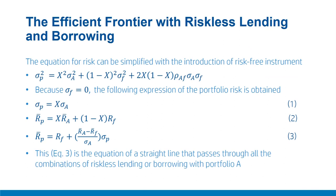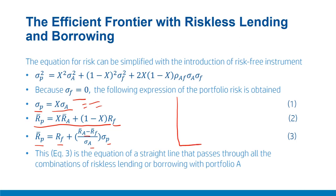Because sigma_F = 0, we have a very simplified expression for portfolio risk: sigma_P = X × sigma_A. Using the two equations for RP and sigma_P, we can simplify to: RP-bar = RF + (RA-bar − RF) / sigma_A × sigma_P. This is a straight line passing through all combinations of risk-free lending and borrowing with portfolio A. This expression provides the expected return and risk relationship for all points on this line.